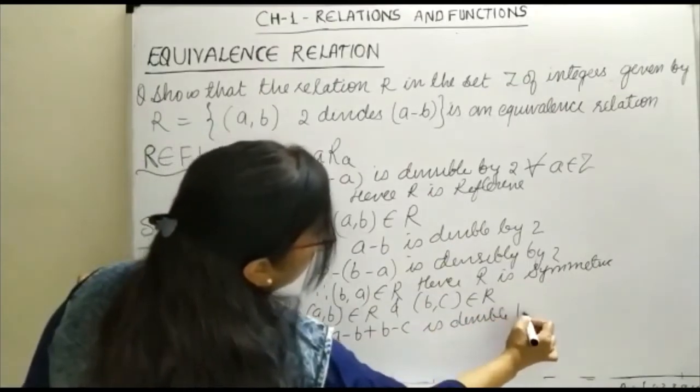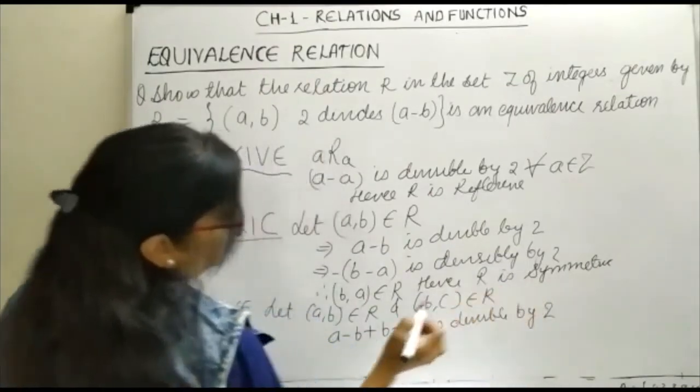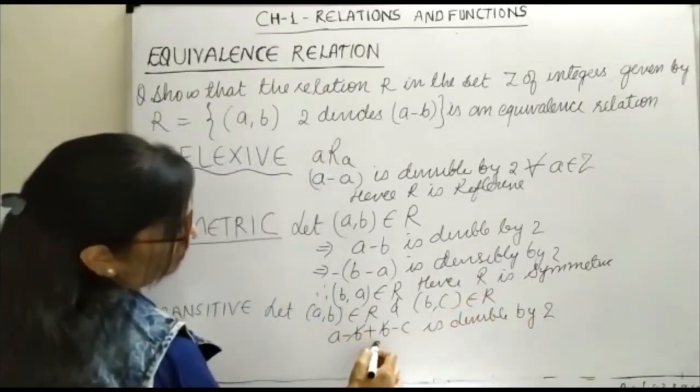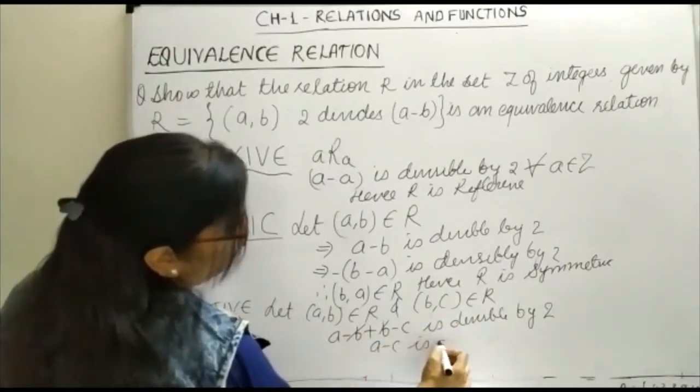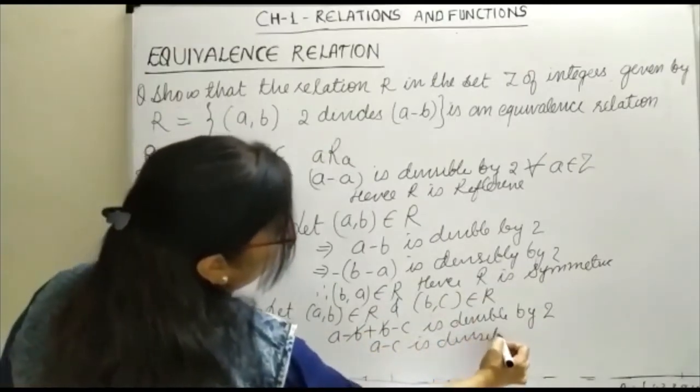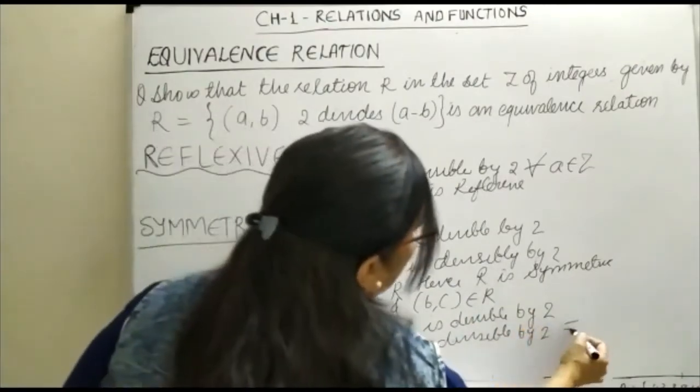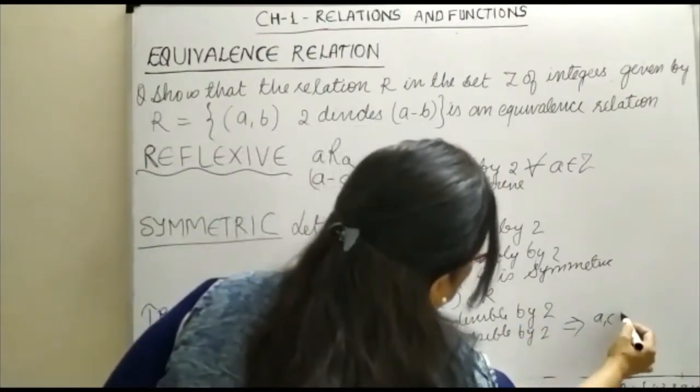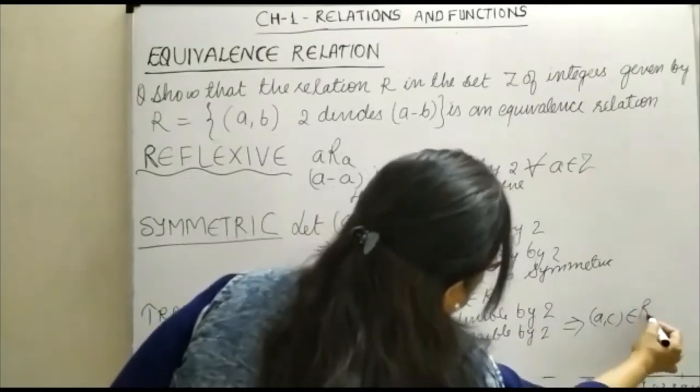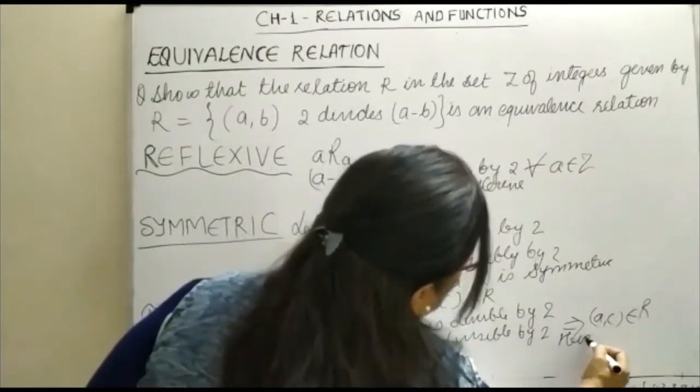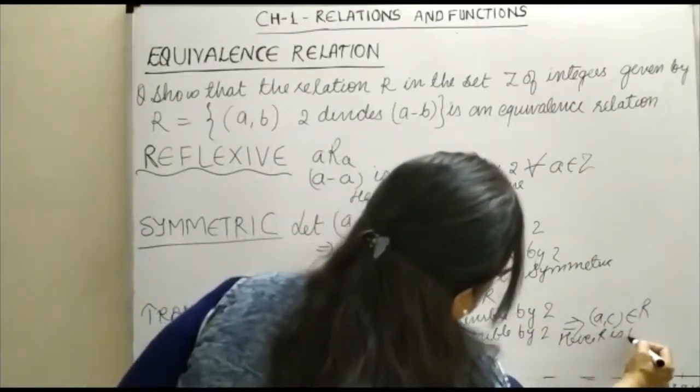You can see this will get cancelled, and A minus C is divisible by 2, which implies (a,c) belongs to R. Hence R is transitive.